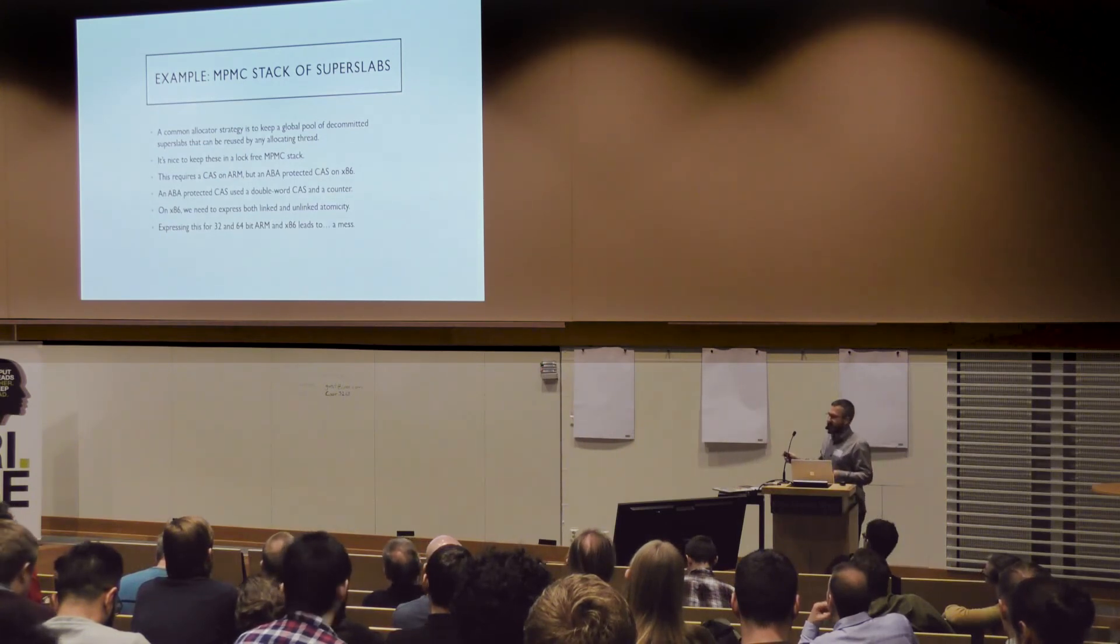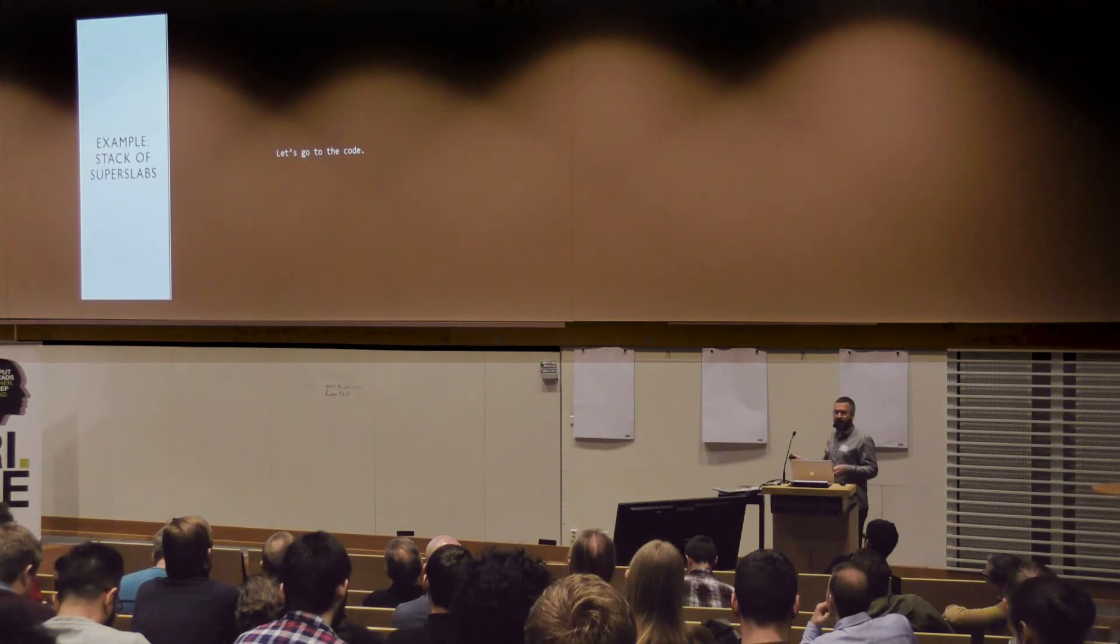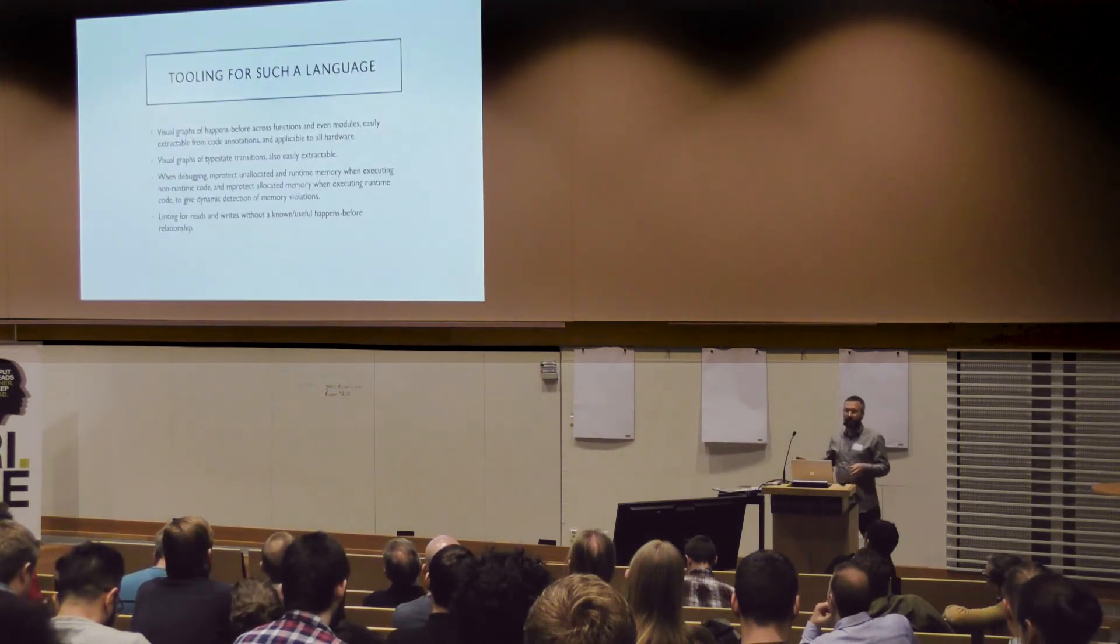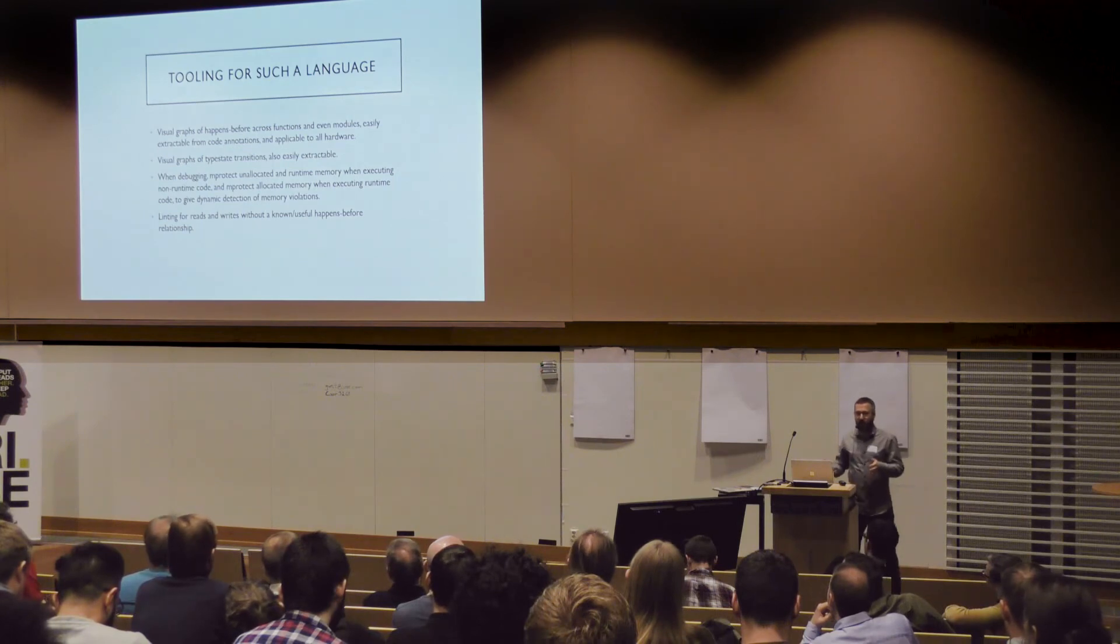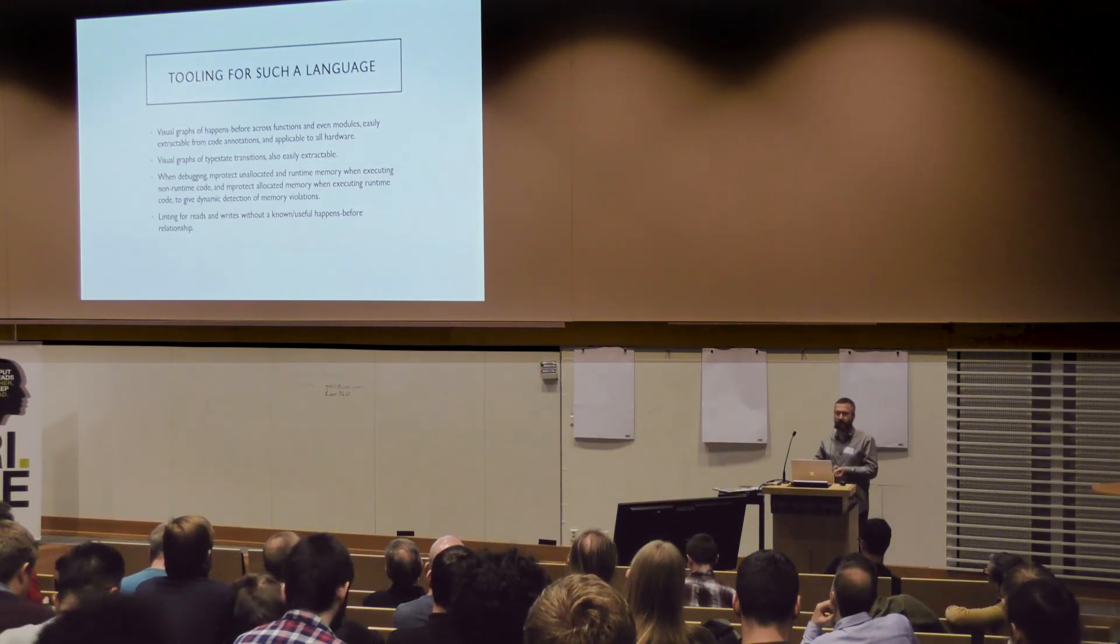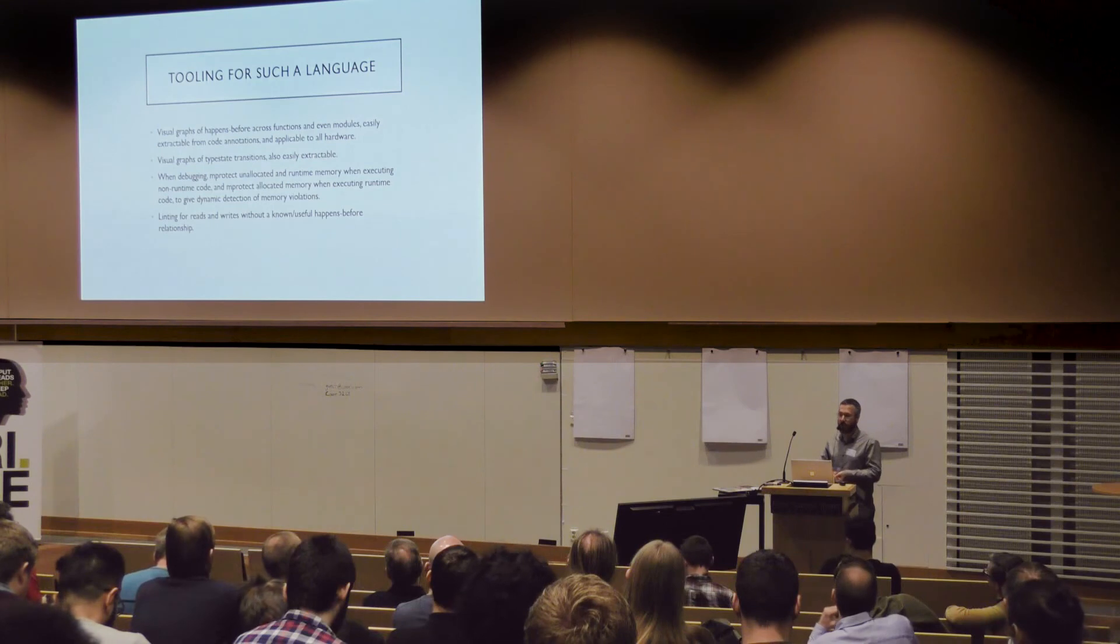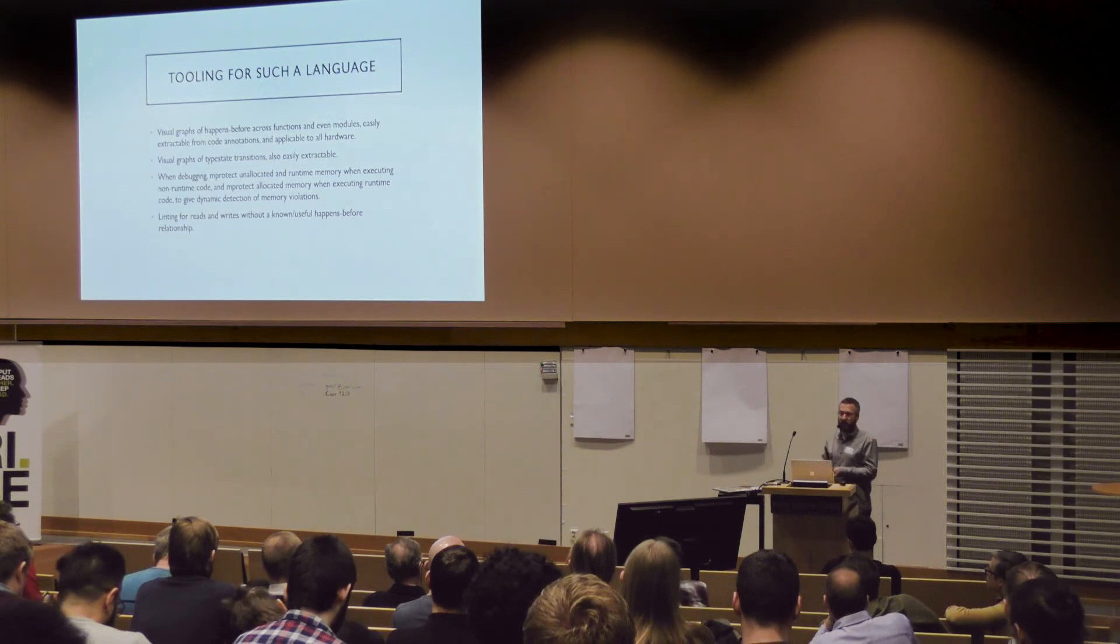I'm going to gloss right over this because I'm out of time. But if anyone wants to talk about ABAs and CAS and ARMS and stuff, there's a kind of a fun example here. I'm not going to show the live code. Tooling. I think the tooling you could get out of this alone would be amazing. Being able to draw graphs of memory dependencies for an arbitrary program is pretty exciting. Being able to, when you're debugging, use MProtect to protect all memory based on whether you're executing runtime code or language level code. This is interesting stuff.